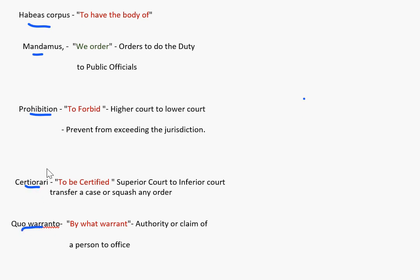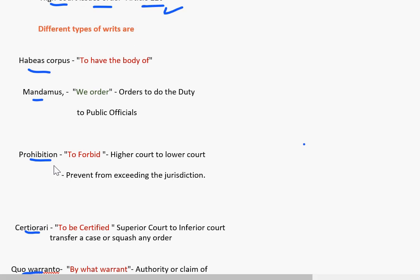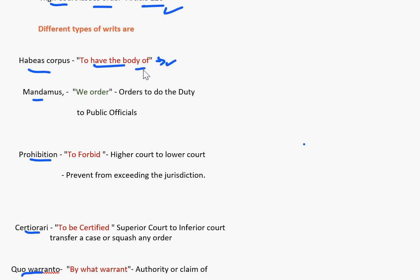These are Latin words, so first let us understand the meaning of these words. Habeas Corpus means 'to have the body of.' This writ is issued when a person is detained by another person or any public authority, and it is issued to produce the person in court. The court then inquires whether the detention is legal or illegal, and if it is illegal, that person is released.